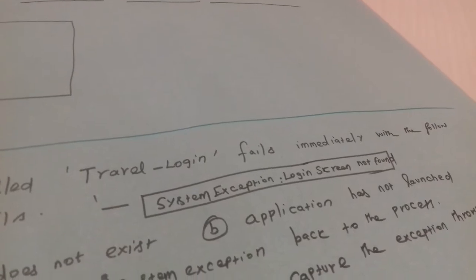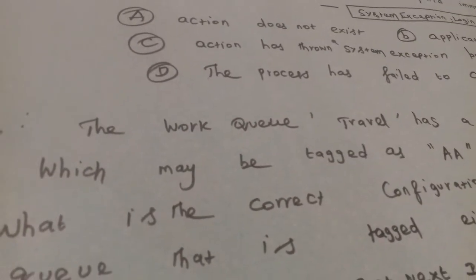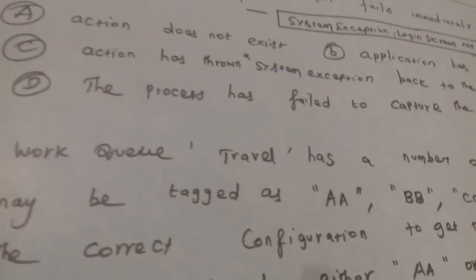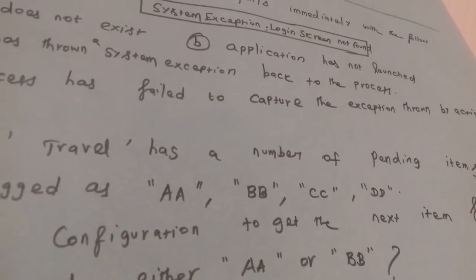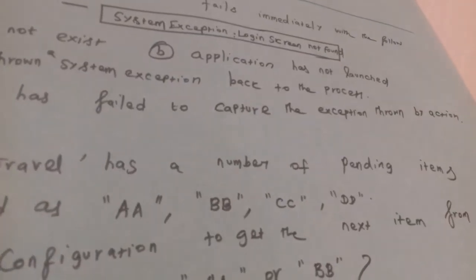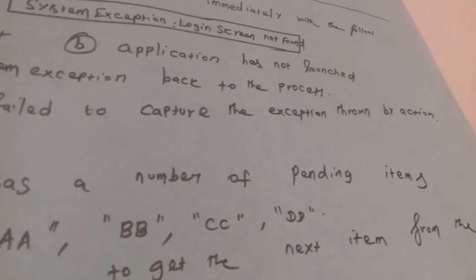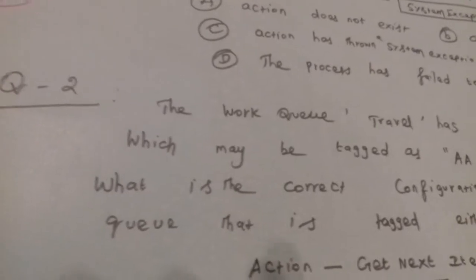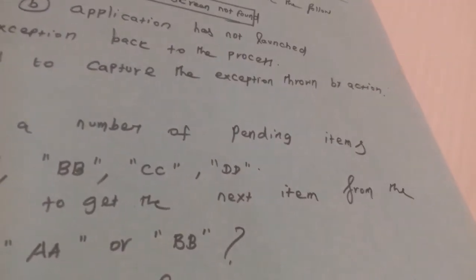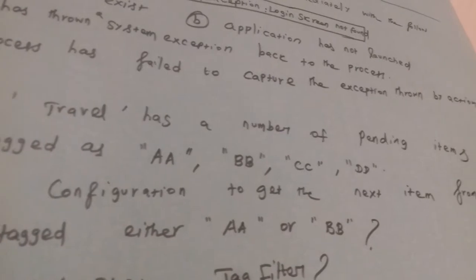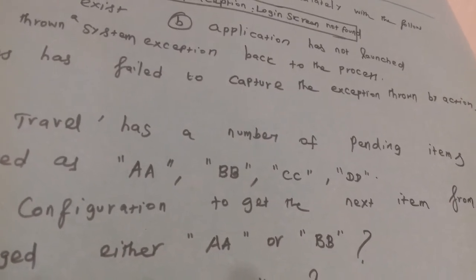Let's talk about work queues. The work queue named Travel has a number of pending items which may be tagged as 'AA', 'BB', 'CC', 'DD'. What is the correct configuration to get the next item from the queue that is tagged either 'AA' or 'BB'?